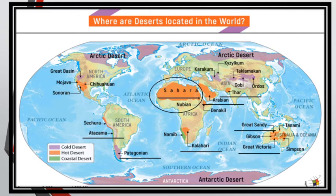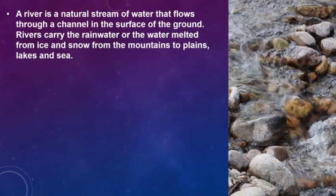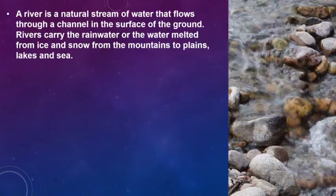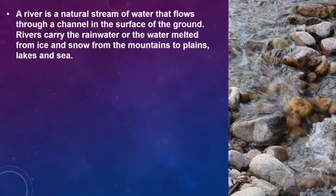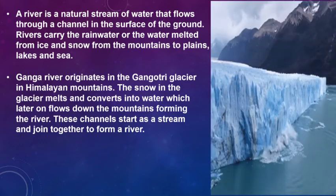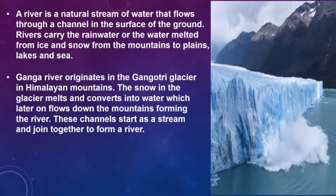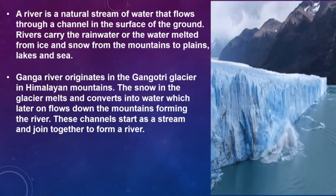The Sahara Desert of Africa is the largest desert in the world. A river is a natural stream of water that flows through a channel in the surface of the ground. Rivers carry rainwater or water melted from ice and snow from the mountains to plains, lakes, and sea. The Ganga river originates in the Gangotri glacier in the Himalayan mountains. The snow in the glacier melts and converts into water which flows down the mountains forming the river. These channels start as streams and join together to form a river.